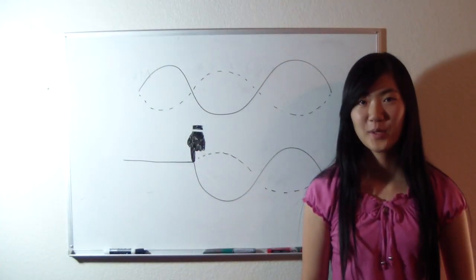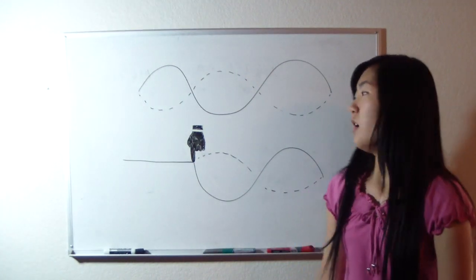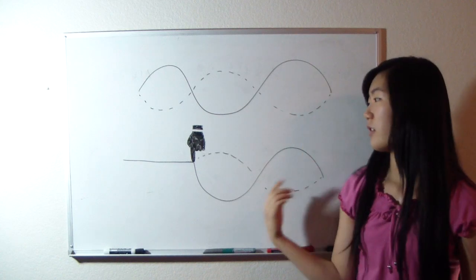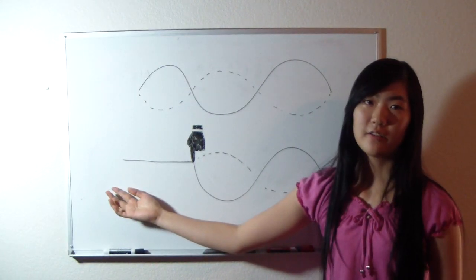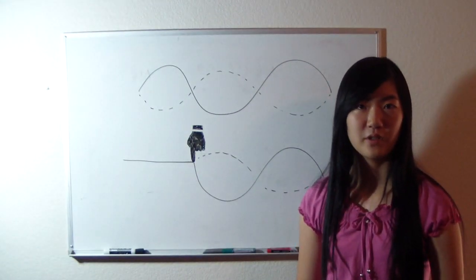When a string instrument player uses a harmonic, they use nodes on a standing wave. When a node is lightly pressed, the pattern of the standing wave isn't disturbed. Rather, the vibrations are prevented from going down the rest of the string. When players lightly press on a string on a node, a nice sound can still be produced.